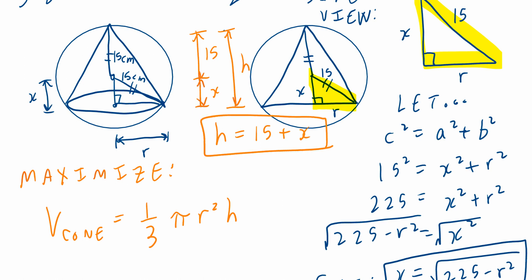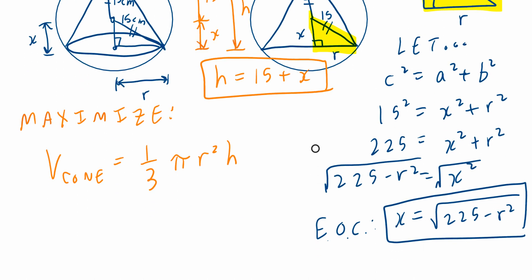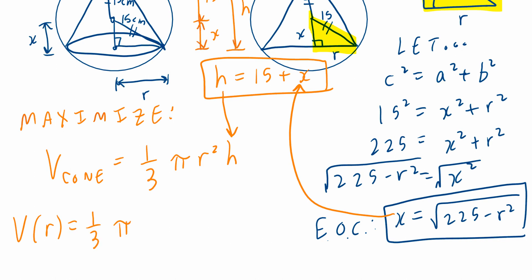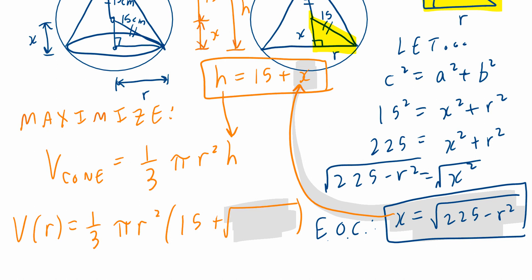I'll put a box around this. Now I can go back, plug in x here and plug in h there — this means I can express volume as a function of radius. The volume as a function of radius is going to be one-third times pi times r squared times in brackets 15 plus the square root of 225 minus r squared.